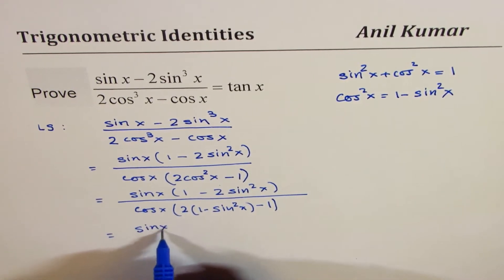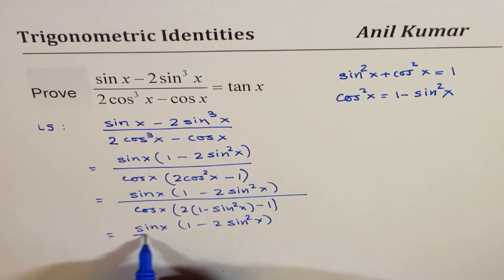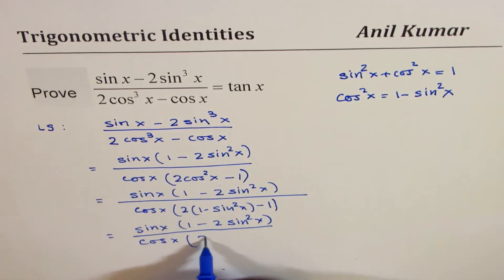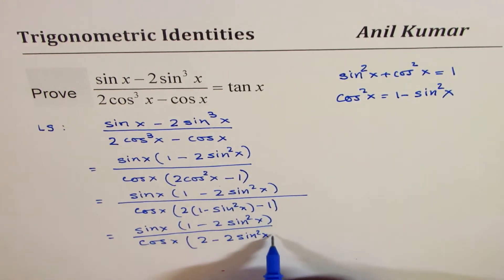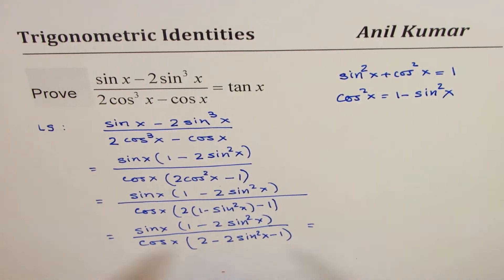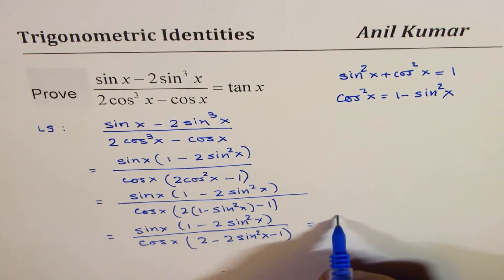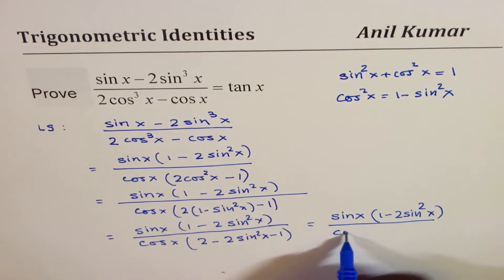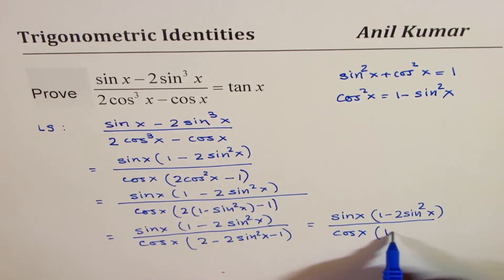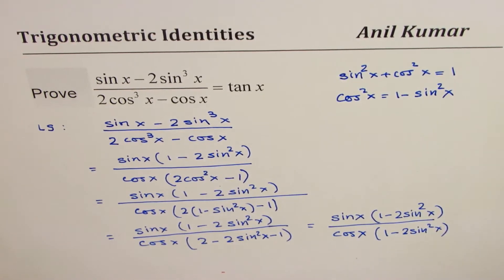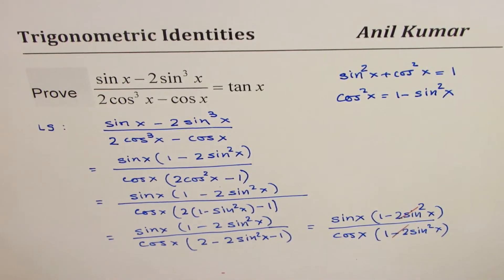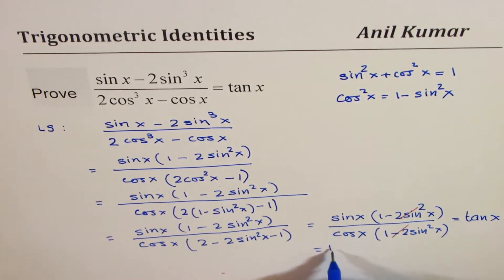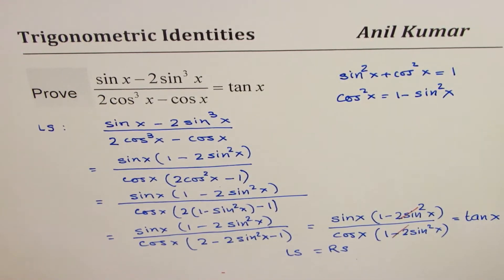So that gives us sine x times 1 minus 2 sine square x in the denominator. If you open this up, you get cos x times 2 minus 2 sine square x and then minus 1. And now 2 minus 1 is 1, so we get sine x times 1 minus 2 sine square x divided by cos x times 1 minus 2 sine square x. So as desired, this factor can be cancelled out — they are exactly the same factors — and what we get here is tan x, which is the right side. So we have proven that the left side equals the right side.